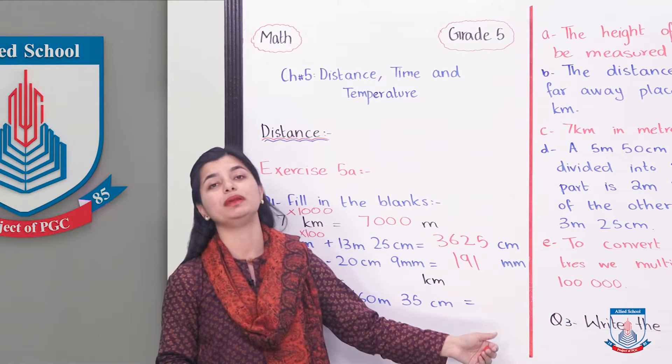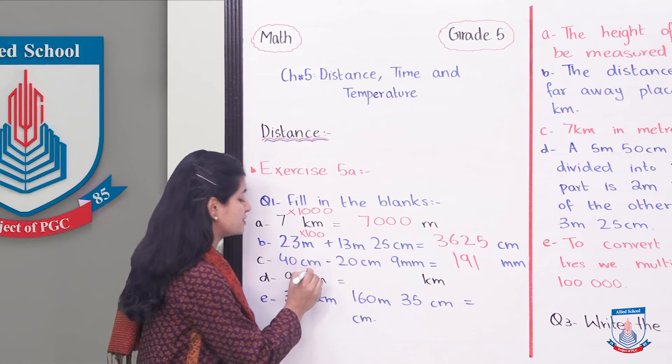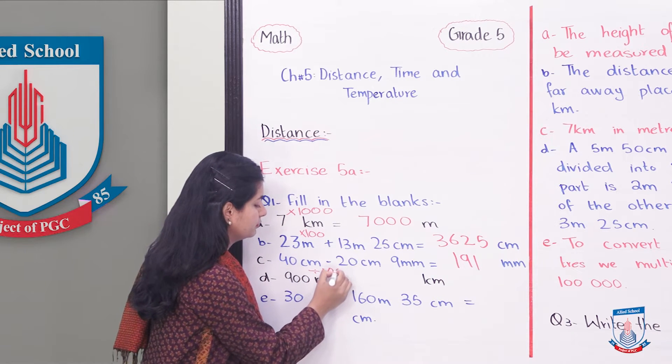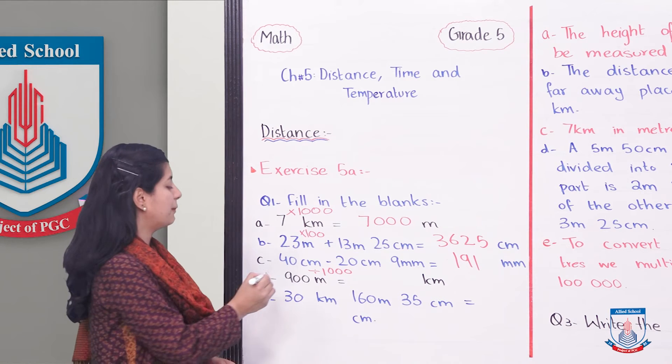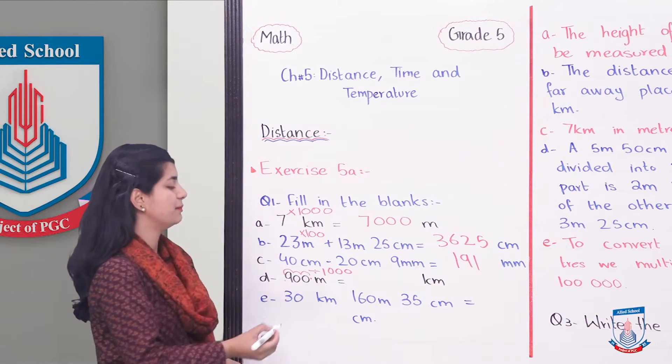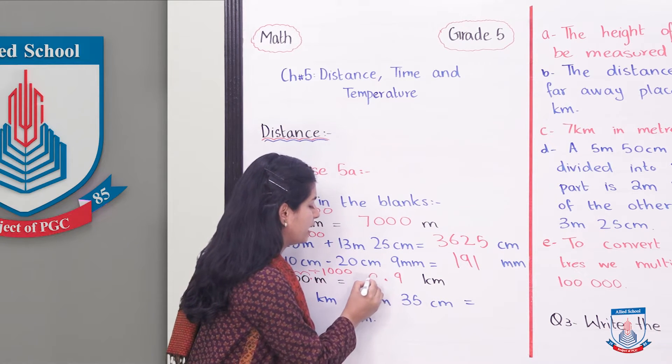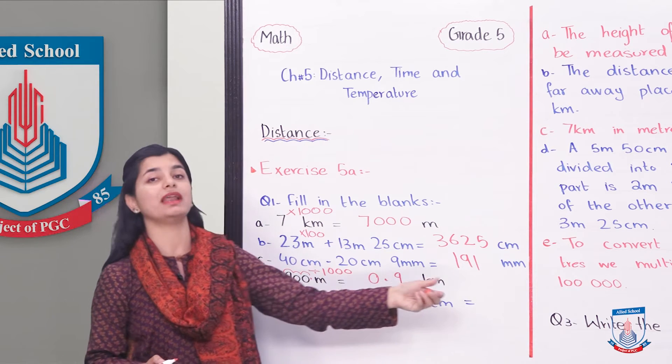Part D: 900 meters into kilometers. Smaller unit to big unit we will divide by 1000. When we divide it, we will place the decimal backwards three places. So we will have 0.9 kilometers.